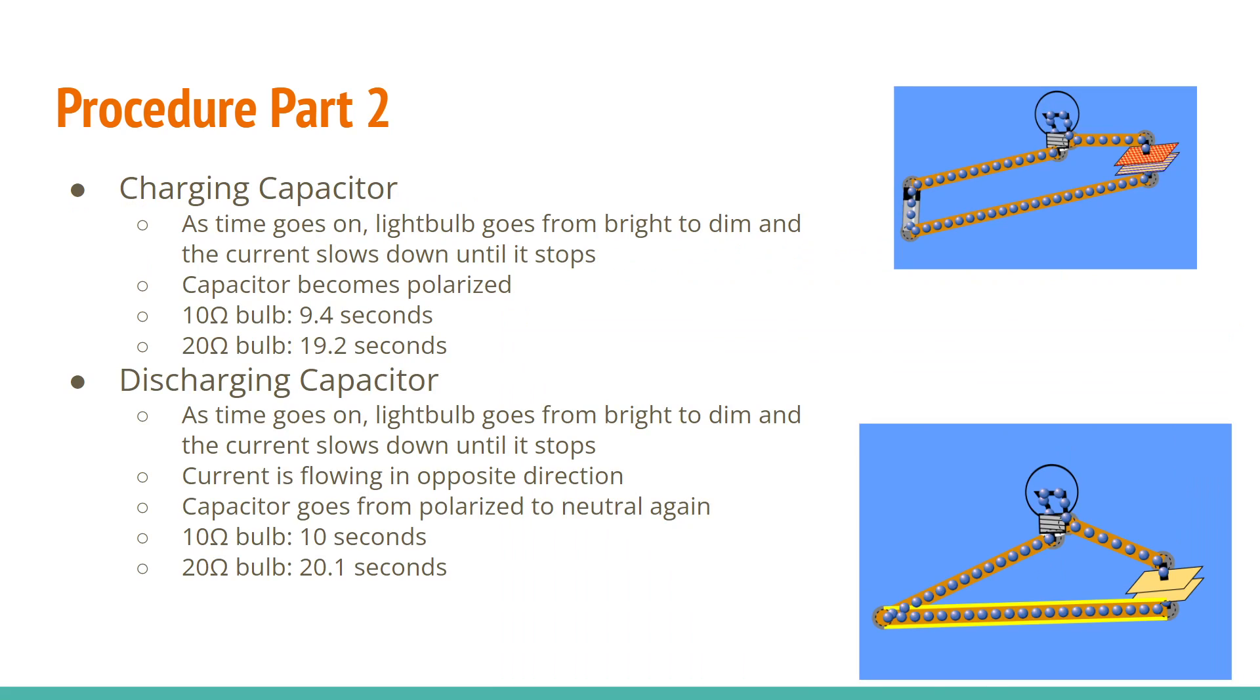The second part of this lab called for using capacitors. And so when charging the capacitor, as time goes on, the light bulb goes from bright to dim. And then the current slows down until the capacitor is fully polarized. And then for the 10 ohm bulb, it took 9.4 seconds. And then the 20 ohm bulb, it was 19.2 seconds, the RCs.